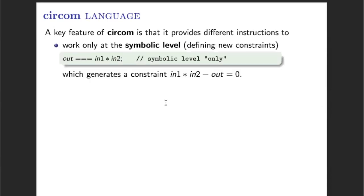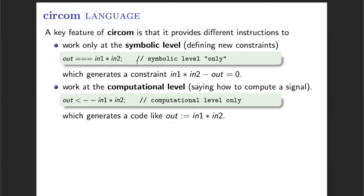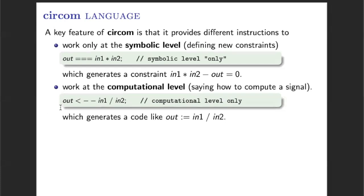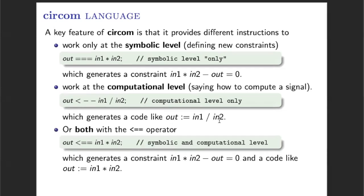In order to work at these two levels, CIRCOM includes different instructions. First, in order to work just at the symbolic level, CIRCOM includes the equality operator. In this case, what we are doing is to add the constraint into the constraint system. As the constraint system is going to be used to generate a Zero Knowledge proof, this constraint has to be quadratic, which means that if we try to include a non-quadratic expression, the compiler is going to return an error. To work just at the computational level, we include the single-arrow operator. In this case, we don't have the extra requirement of only using quadratic expressions, because what we are doing is adding this line of code into the executable file — we are not adding any constraints into the constraint system. Finally, we have the double-arrow operator that combines both operations, adding the constraint into the constraint system and the assignment into the executable code. Again, in this case, we can only use quadratic expressions.